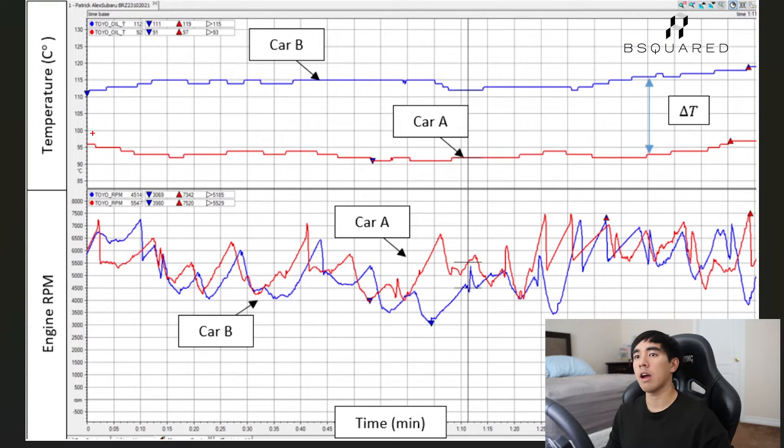Okay, on to the data analysis portion of our review for the Grassroots Performance oil cooler. Displayed here is the graph of engine oil temperature versus engine RPM and this is for a hot lap for both of the cars overlaid against each other. Car A is in red, car B is in blue and you'll see that throughout the following graphs that we're going to present.